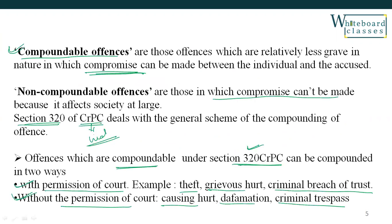Compoundable and non-compoundable offences refer to those offences which can or cannot be compromised between parties. The list of which offences are compoundable or non-compoundable is given under Section 320 of CRPC.